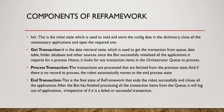The Get Transaction State is the data retrieval state used to get the transaction from a queue, table, or folder — any data source. Once the bot is successfully initialized and has all required applications, it looks for transaction items in the Orchestrator queue to process. The Process Transaction State processes the transactions fetched from the Get Transaction State. If there is no record to process, the robot automatically moves to the End Process State — this is automatically handled by the RE Framework.